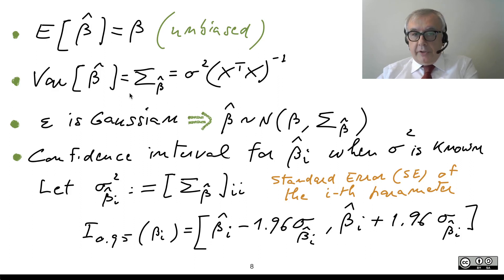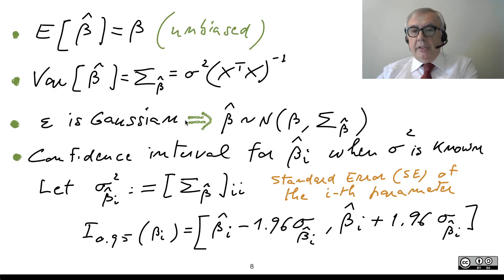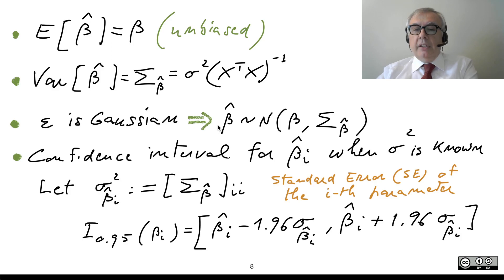This is the value of the variance matrix. Moreover, if epsilon is a Gaussian vector, then beta-hat, being a linear function of a Gaussian vector, is normal as well.